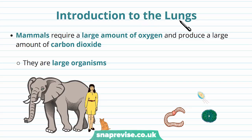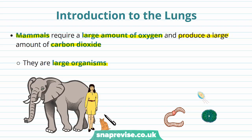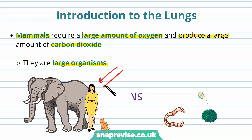So first of all, let's talk about the lungs and introduce what they do. Mammals and larger animals require lots and lots of oxygen, and because of this they produce a large amount of carbon dioxide as a waste product. These tend to be large organisms — elephants, horses, humans — and even cats, dogs, and mice are still considered large because of the number of cells they have.